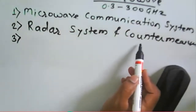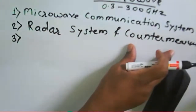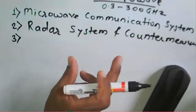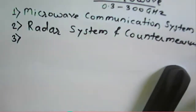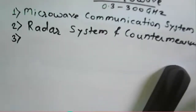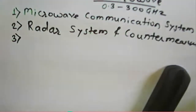Countermeasures involve finding whatever objects are present and targeting them, or disturbing another radar system. This is done by providing a fake signal so that the enemy radar cannot recognize you. Countermeasures are used to confuse the opposing radar system, and this is mostly used in military applications.